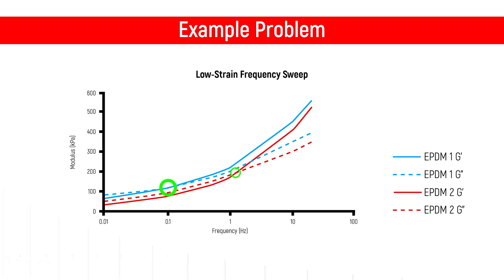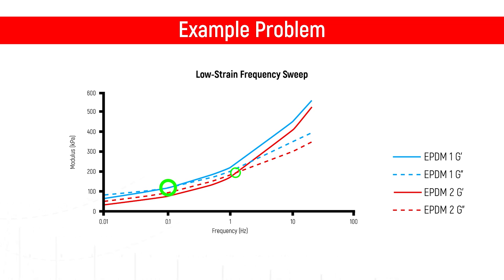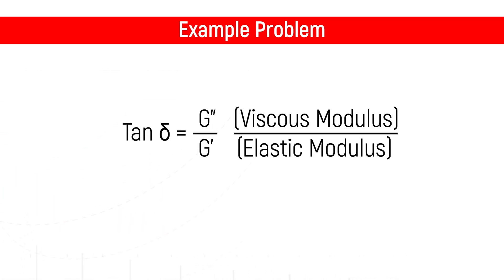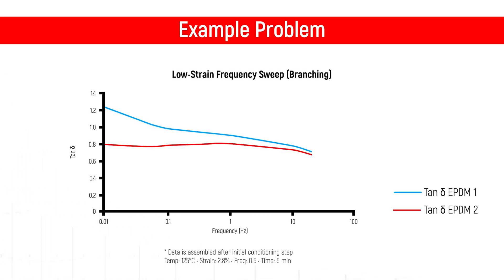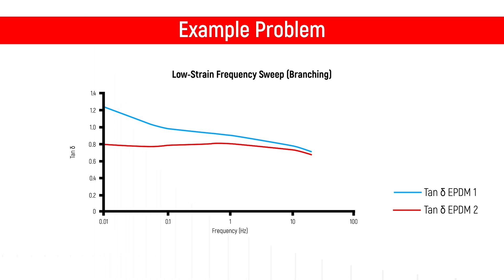So what about the branching characteristics of these compounds? We need to calculate the tan delta of the viscous modulus over the elastic modulus as a function of frequency. Once we have it plotted, it will look somewhat like this. The more level the tan delta graph, the greater the branching of the base polymers. The more of a slope the tan delta has, the less branched these polymers are. EPDM 2 has less of a slope, meaning polymer chains are more branched than EPDM 1.